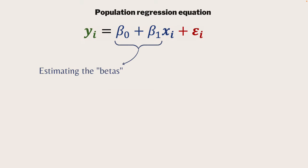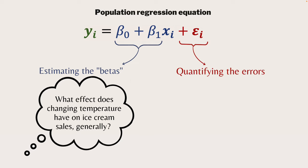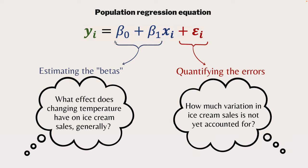The role of a regression is to both estimate those betas - to figure out what is that linear relationship, what effect does changing temperature have on ice cream sales. That is the first objective of a regression. We also want to quantify the error - not only do we want to figure out what is the effect of x on y, we want to know how much variation is left over, how much variation in ice cream sales is not yet accounted for by looking at changing temperature.